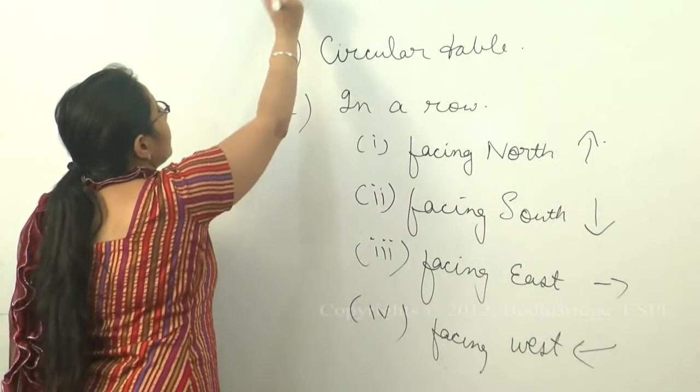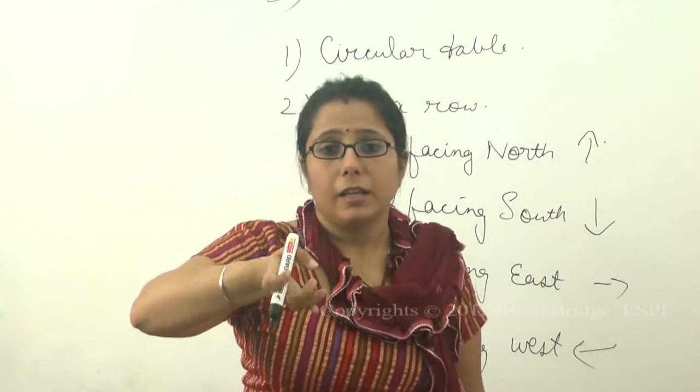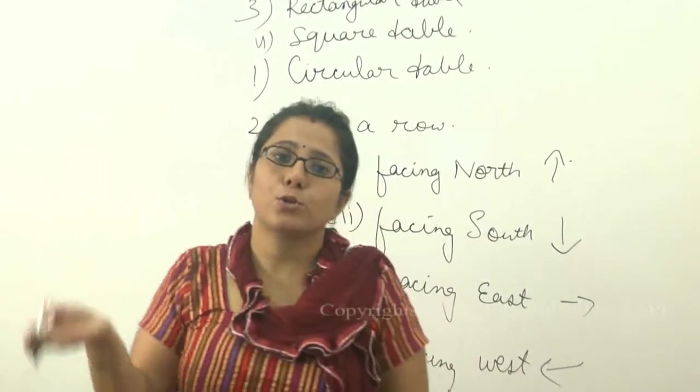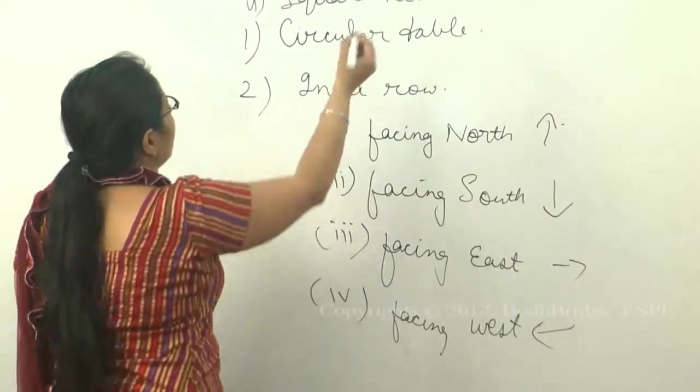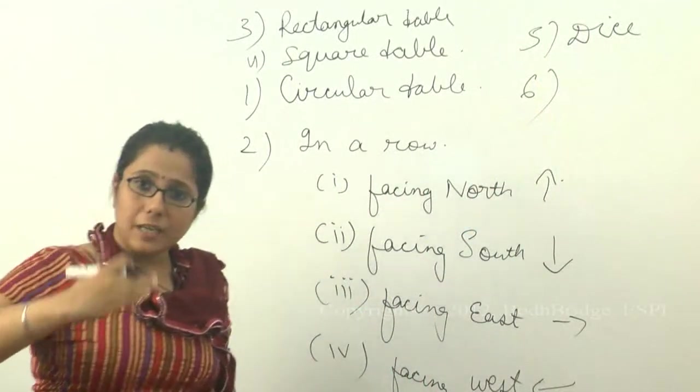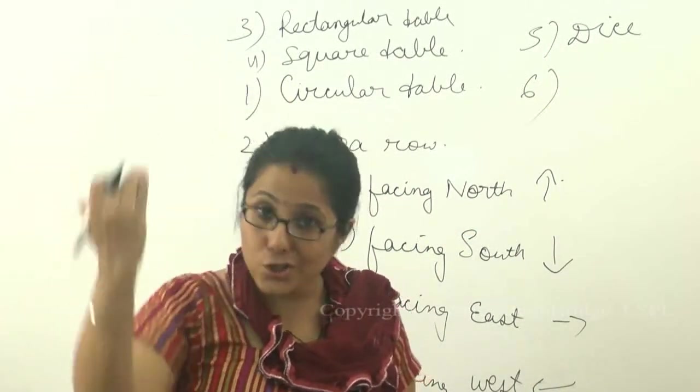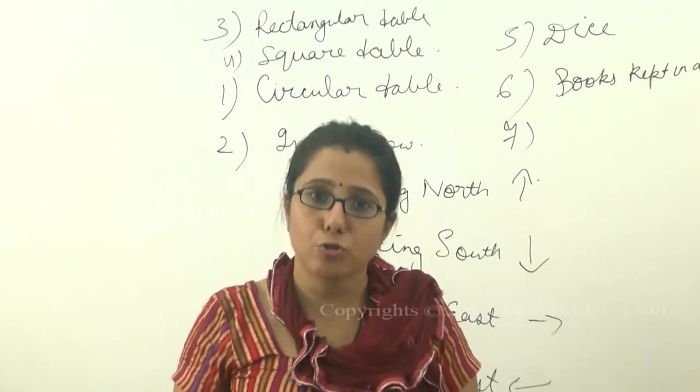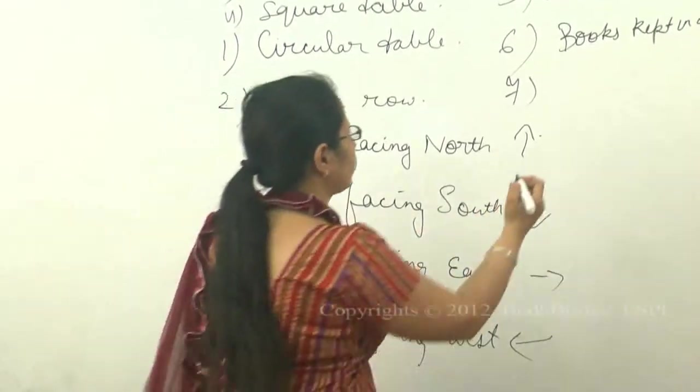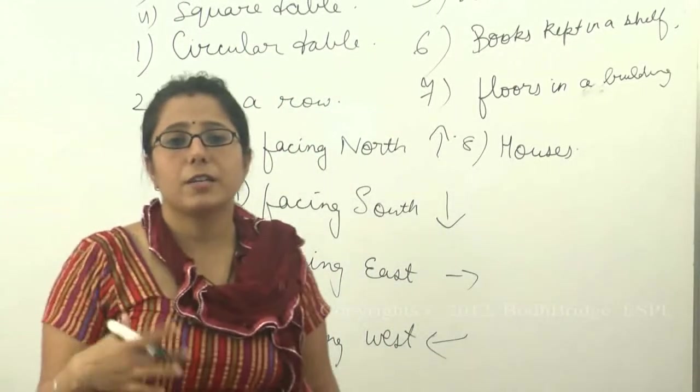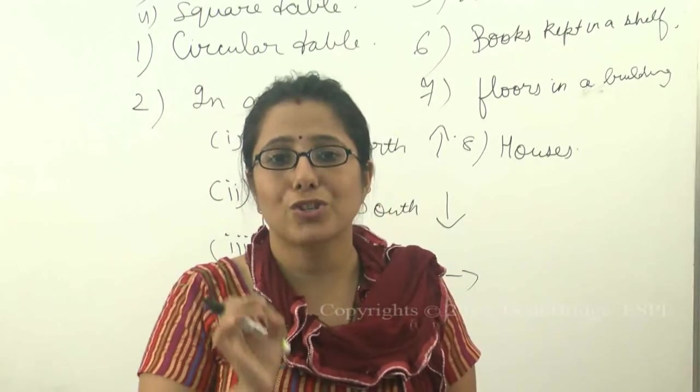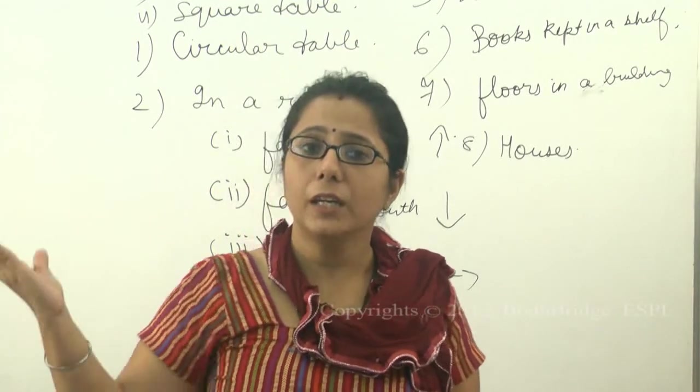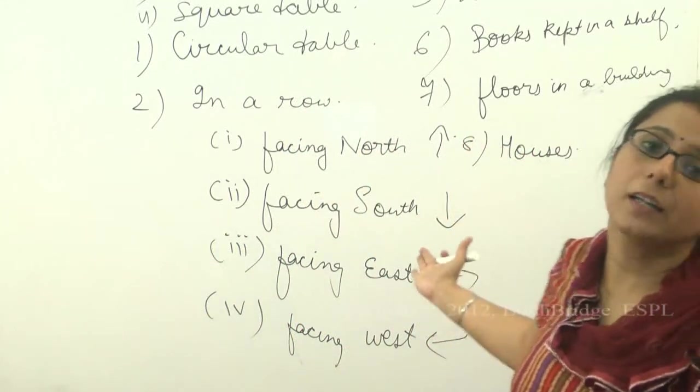Apart from circular table or linear arrangements, there are arrangements like rectangular arrangement. Arrangements can be in the form of rectangular table, square table, or anything. Then you have the arrangement of a bookshelf, books kept in the shelf, questions based on houses adjacent to each other, or floors in a lift. Any number of arrangements can be there. All you have to do is follow the conditions which are given and arrange the things in a row, circular order, or proper sequence.